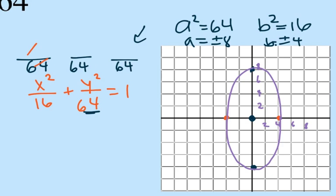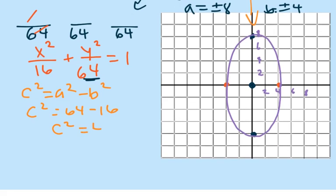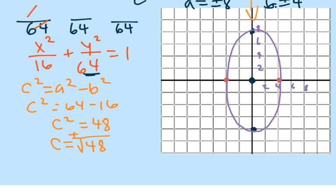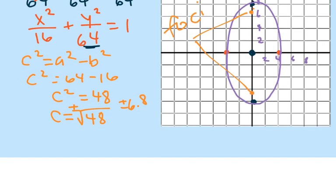The foci are on the y-axis. c-squared equals a-squared minus b-squared, so c-squared equals 64 minus 16 equals 48, and c equals plus or minus the square root of 48. Since √48 is just under √49, it's about 6.8. So my foci are approximately at (0, 6.8) and (0, -6.8). Reduced, √48 becomes 4√3, so the exact foci are at (0, 4√3) and (0, -4√3).